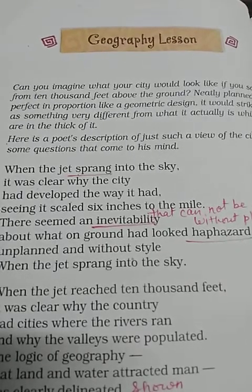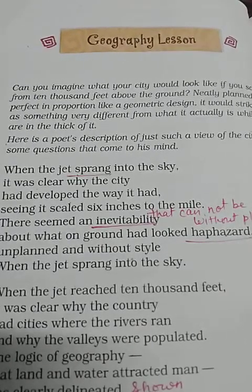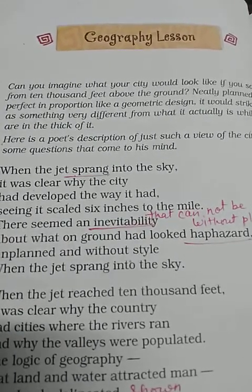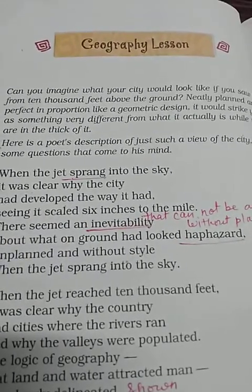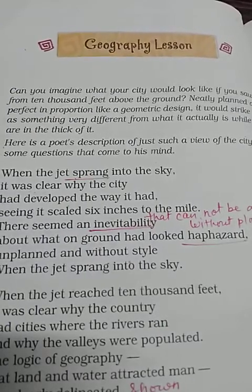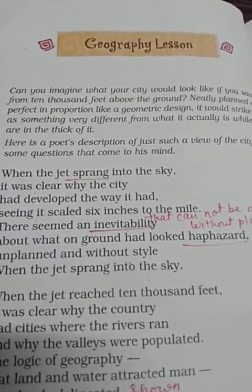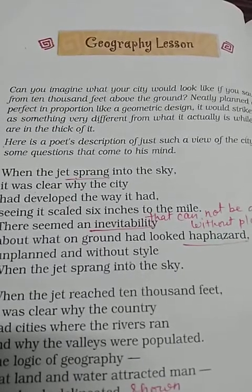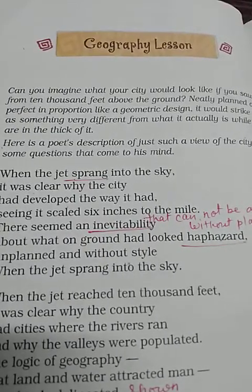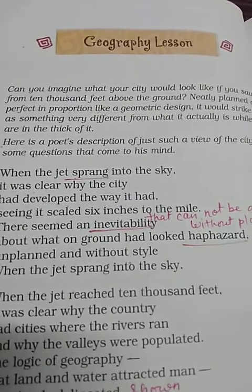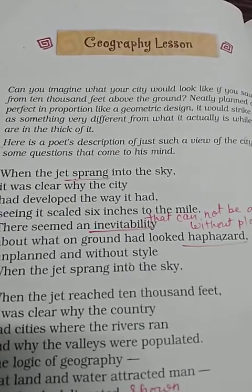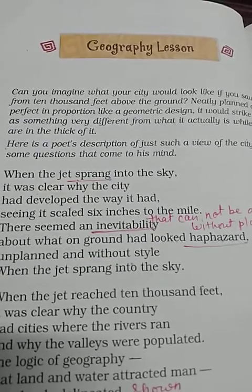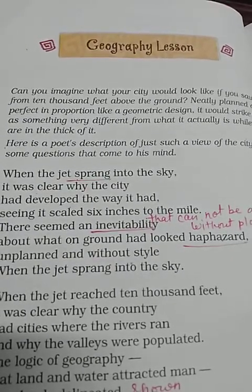Good morning students. Today's topic is a poem 'Geography Lesson' written by Zulfikar Ghose. The poem is based on one of the poet's experiences travelling by aeroplane. It is divided into three parts according to the altitudes at which the plane is flying.